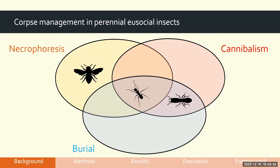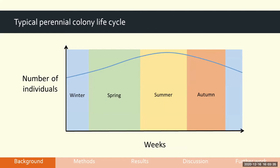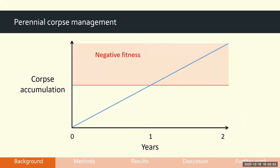Honeybees tend to exclusively remove their dead and carry them away. But we actually don't know anything about wasps and bumblebees, which are annual eusocial insects. In perennial colonies there are always a high number of individuals, and at some point they would have crossed a negative fitness threshold where corpse accumulation was causing a negative fitness cost, driving the evolution of corpse management behaviours.